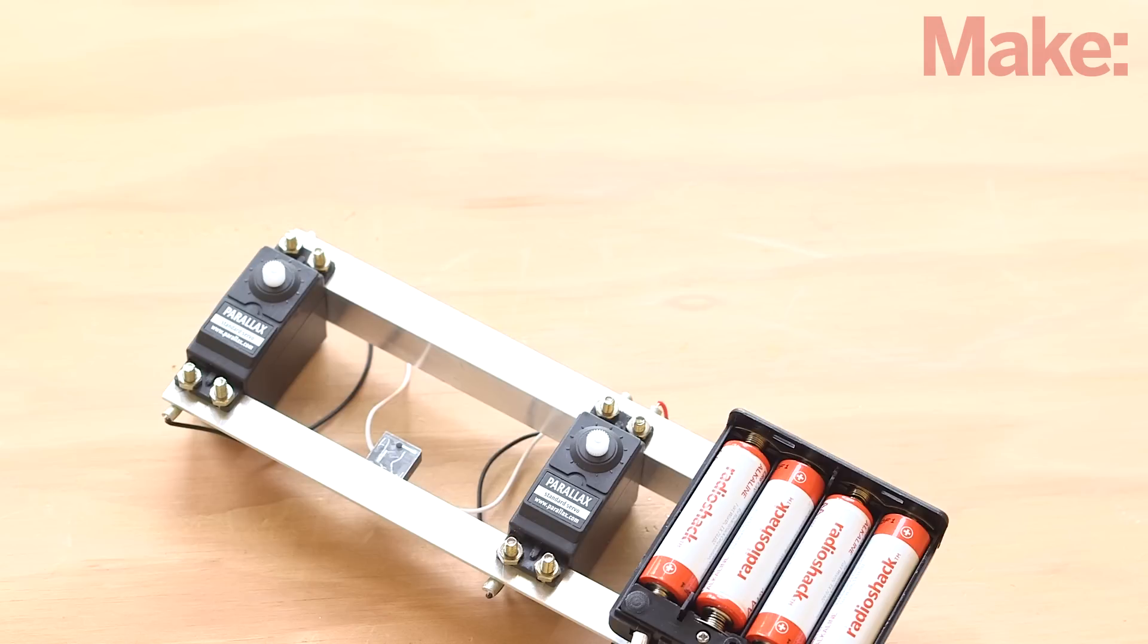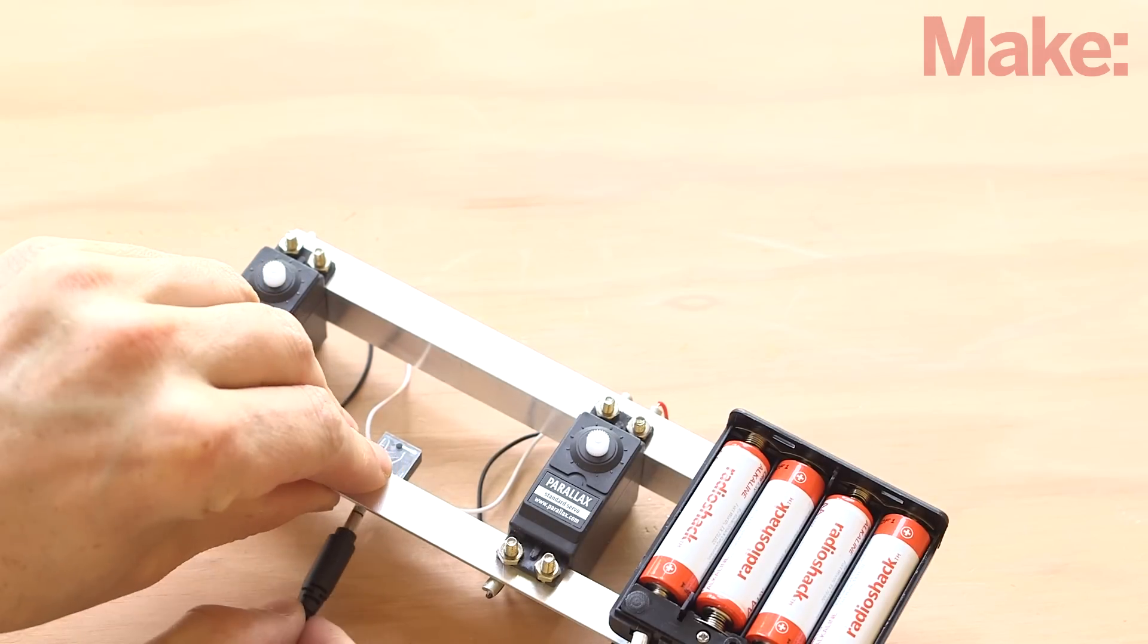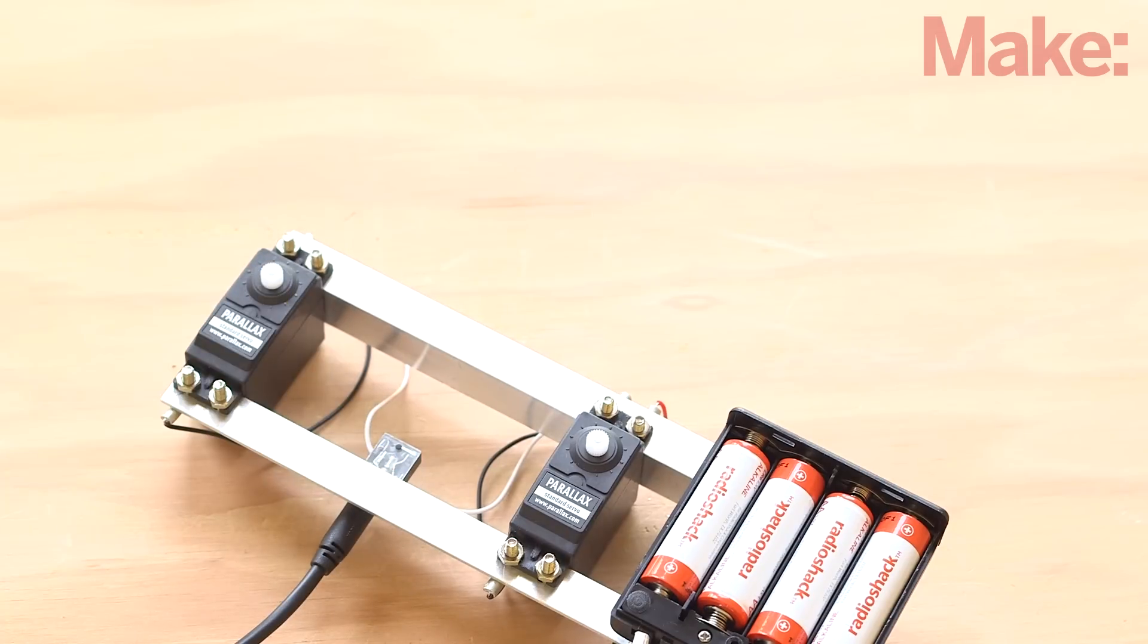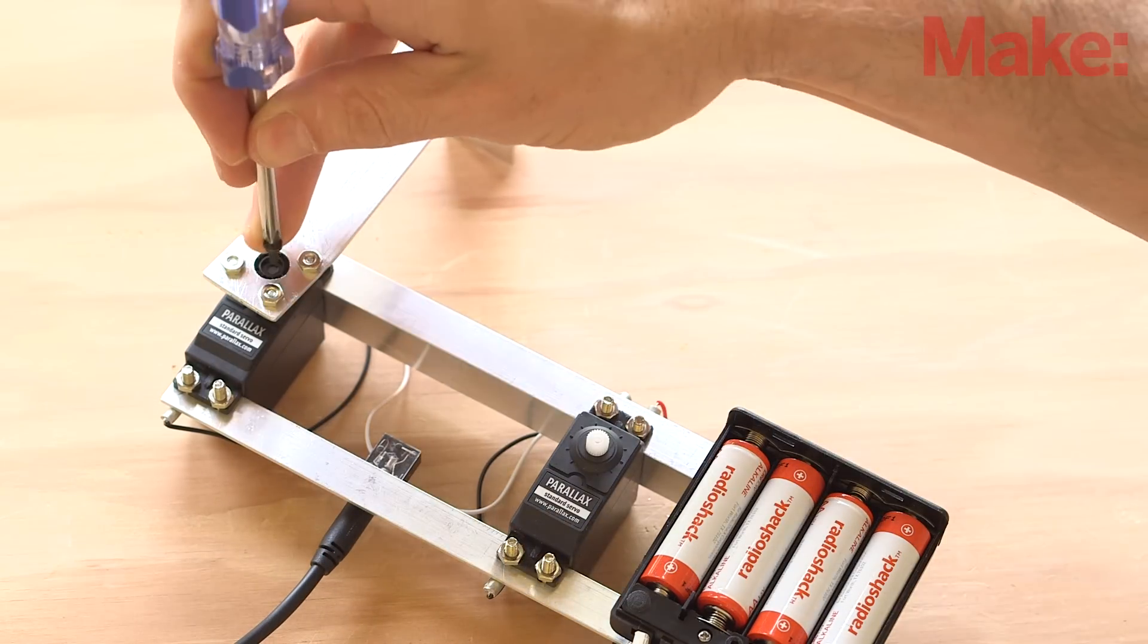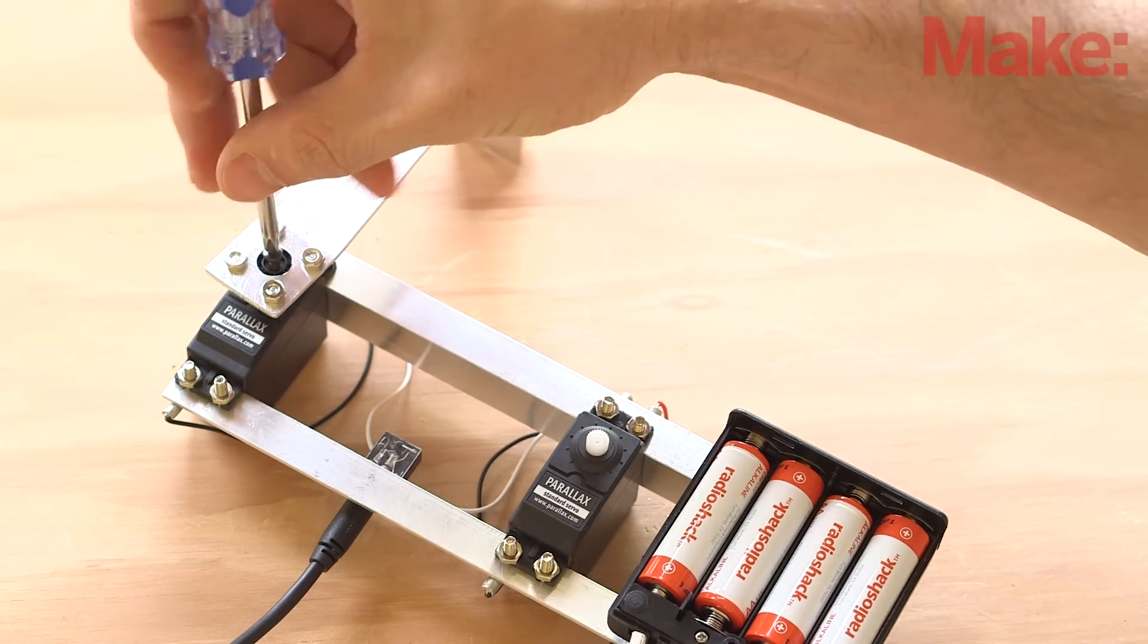Before we assemble the bot, download the calibration audio file from the project page, connect your bot to power and your audio output, and turn it on. Turn your volume to maximum and play the file. Your servos should rotate to their center positions and stop for 10 seconds. When it stops, fit the upper arm into the forearm at the elbow joint, getting the angle between them as close to 90 degrees as possible and secure.